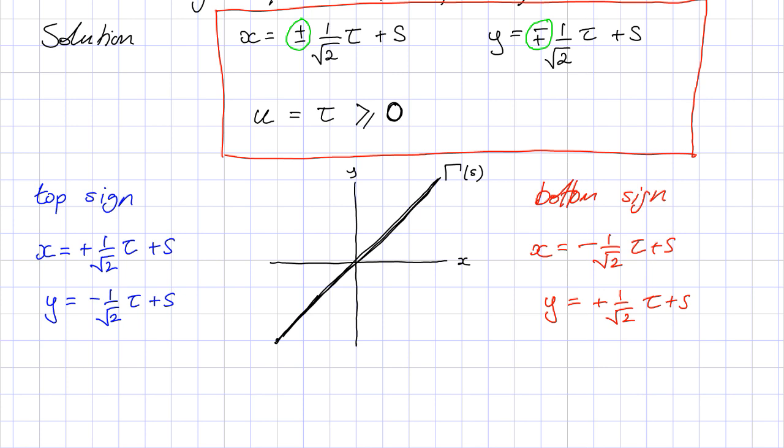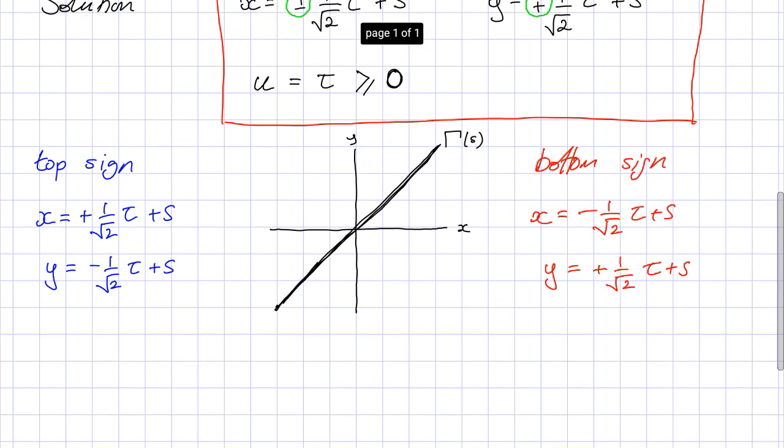Let's draw these two families of characteristic curves. We'll start with the top sign. We don't have to draw the whole family; we can think of particular examples. Something particularly simple that we could look at is when this s here is zero. So s equals zero means that when tau equals zero, i.e. I'm starting at my boundary, x is going to be zero and so is y.